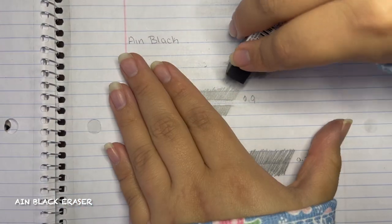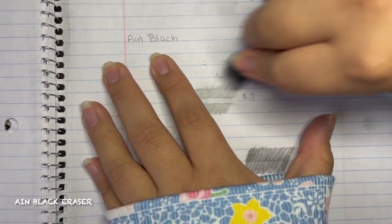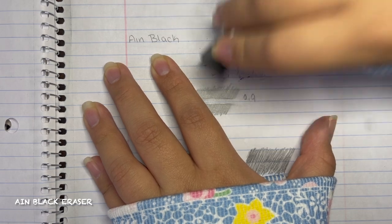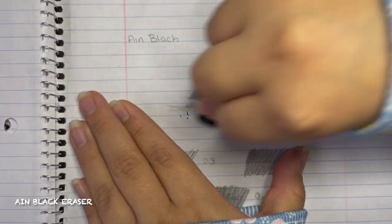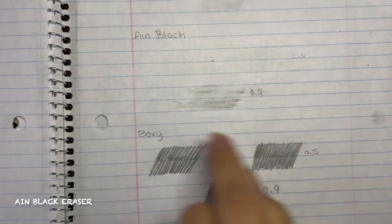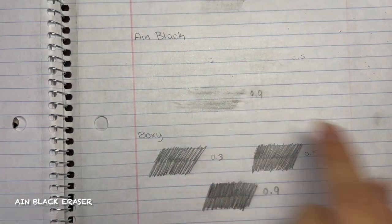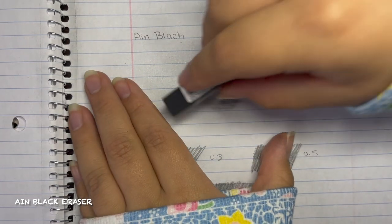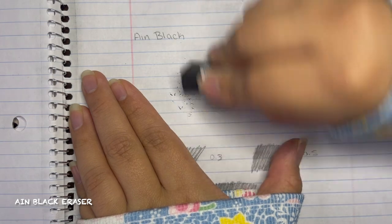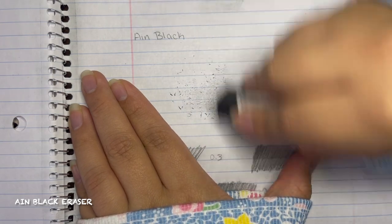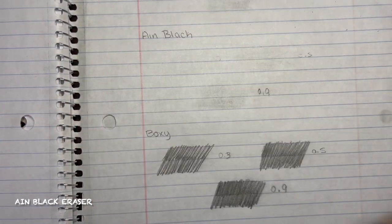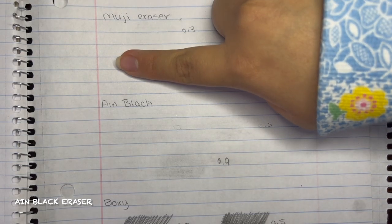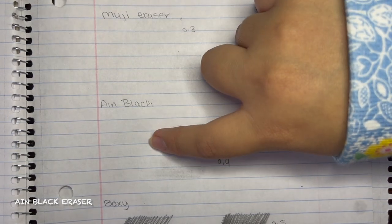And when I tried erasing everything on the 0.9, it had a lot of graphite even on the second chance, so I had to do it again in order to get rid of it all. And it still left some graphite there, and I would not recommend this eraser because compared to the Muji one it wasn't that clean and there was still a lot of graphite left.